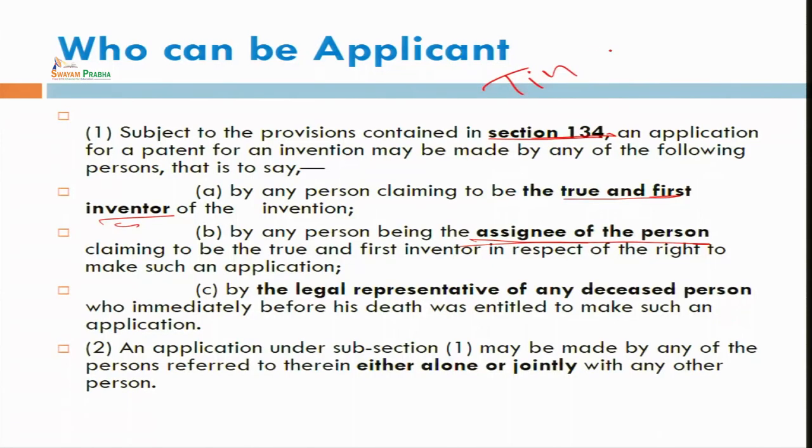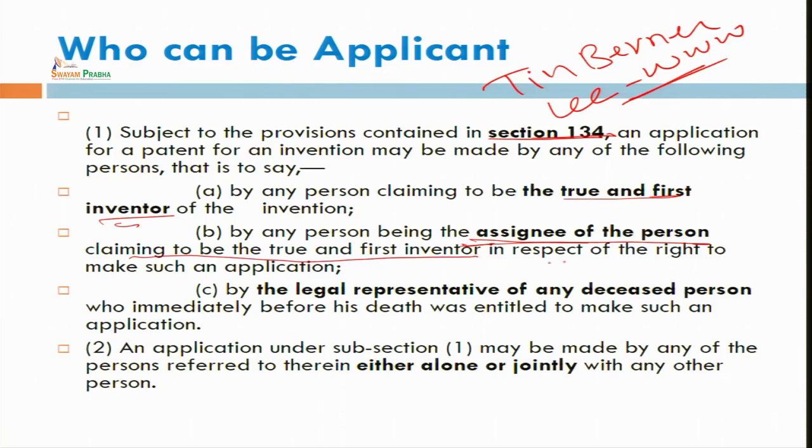For example, Sabir Bhatia invented a new thing and he can assign that particular invention to Microsoft. Many people do not want to go for the patent commercially — for example, Tim Berners-Lee, who invented the WWW, did not want commercial exploitation of his patent; he relinquished it. Similarly, the person who invented the polio vaccine also did not take commercial benefit. Under section 134, either the inventor himself can go for the patent or he can assign it, and the person through whom a claim to be true and first inventor is made in respect of the right to make such application is also covered.